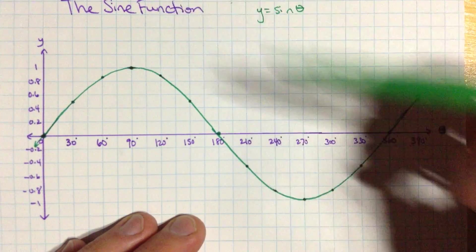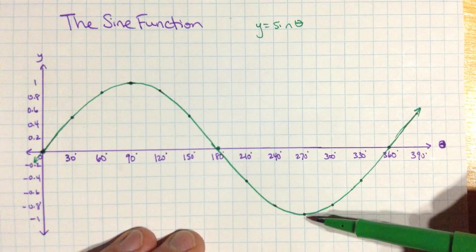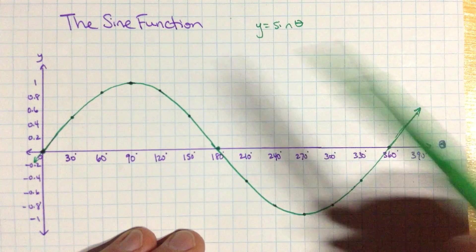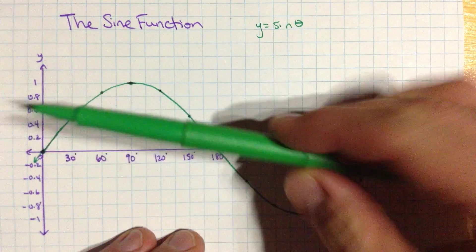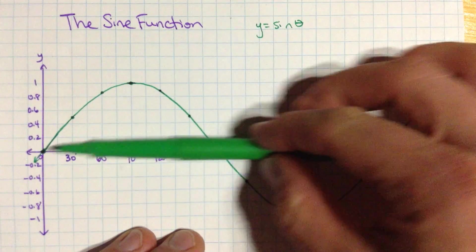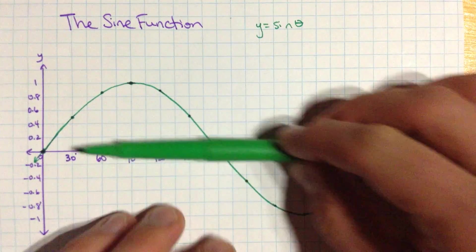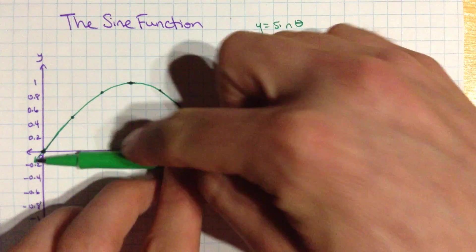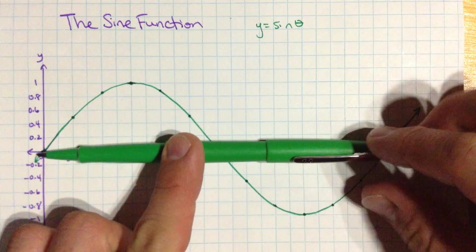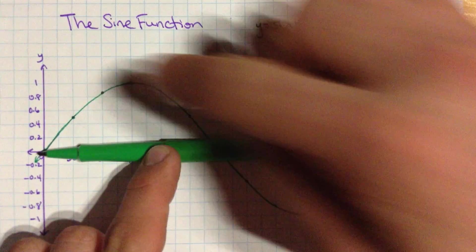The maximum is 1. The minimum is negative 1, down here. The midline, or this line that is in the middle of the function, is the line y equals 0. So the function goes one unit above that and one unit below that. The midline is always the average of the maximum and the minimum.